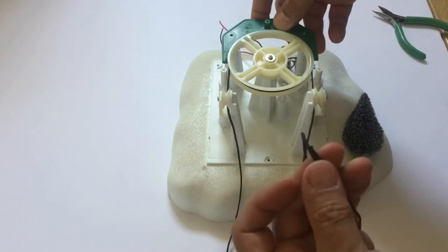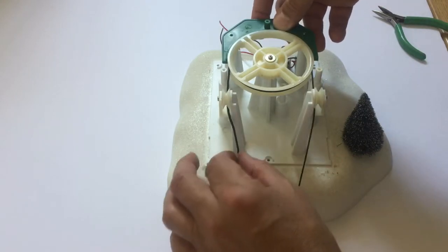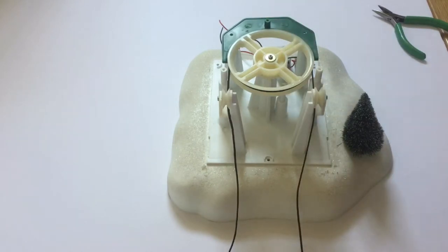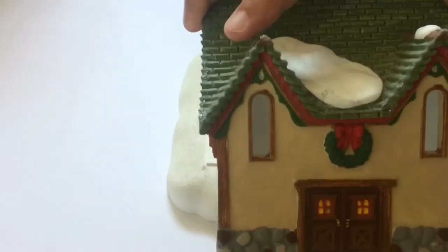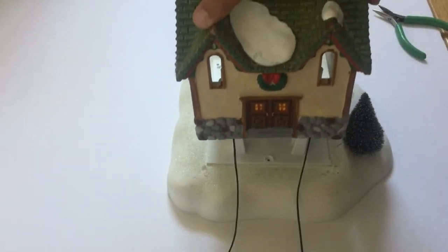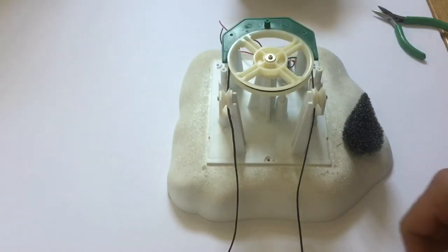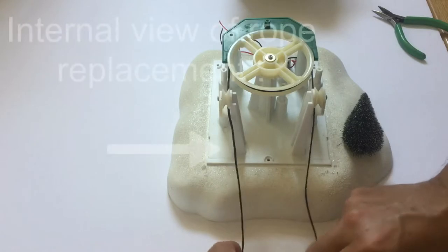We have taken the unit apart to show you how the string runs through the unit. To restring a unit, you do not have to disassemble the whole unit. If you go by the melting of the string, you will be able to pull a new rope through the unit without dismantling all the screws.